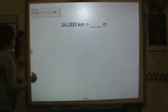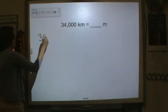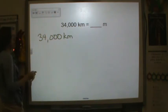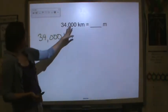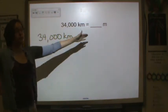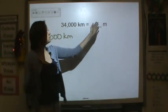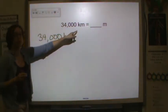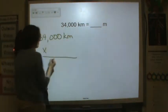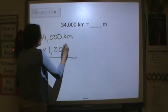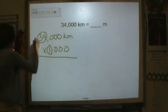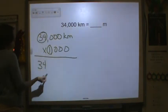Kilometers to meters. If I have 34,000 kilometers, remember kilo means a thousand. If I'm going from a really large unit to a smaller unit, my number of pieces is actually going to get bigger. So I'm going to multiply by a thousand because my unit's getting smaller. So basic fact is 34,000.